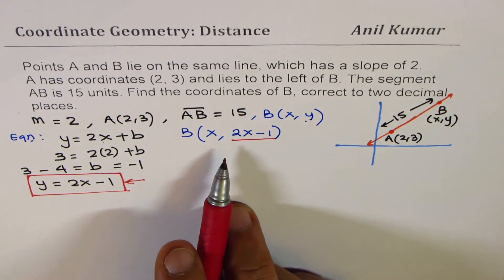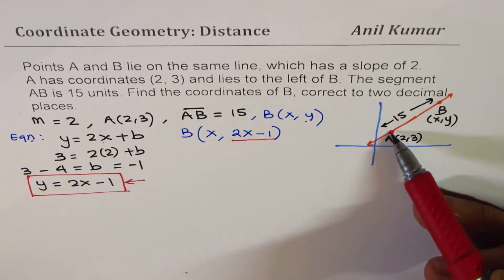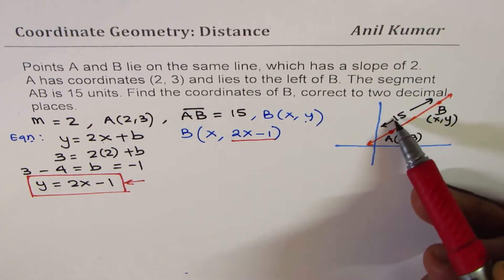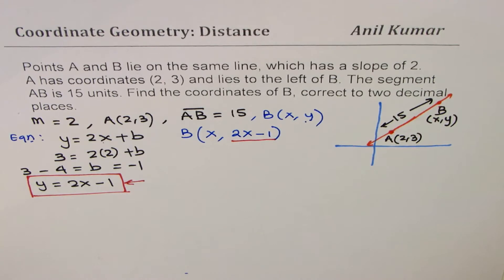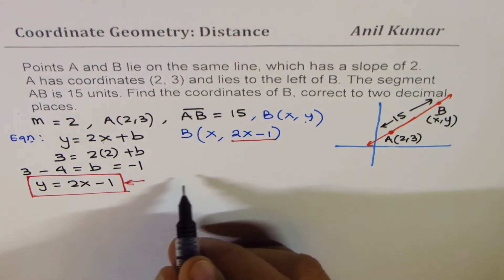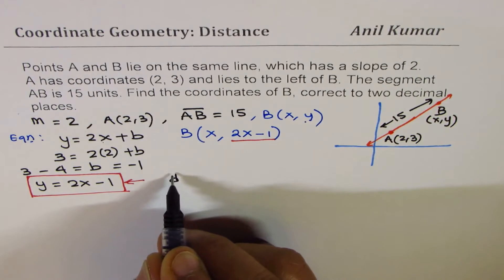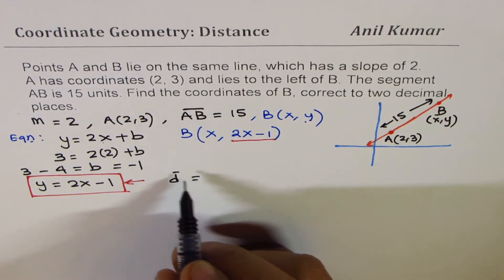How does that help? Now, we are given the distance between A and B as 15, right? So, that really means we can say that the distance d is, the formula is, we can say distance squared